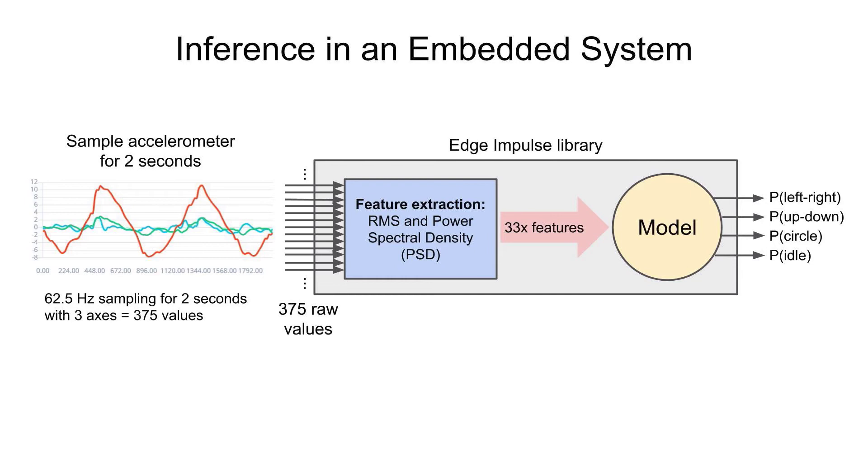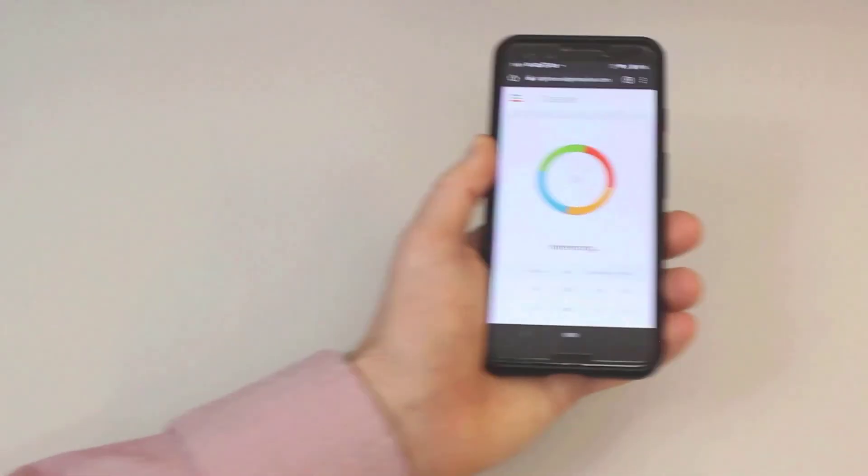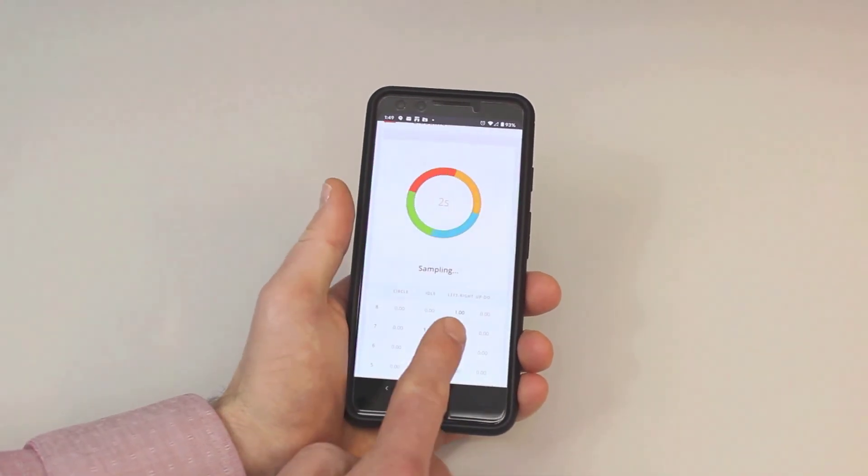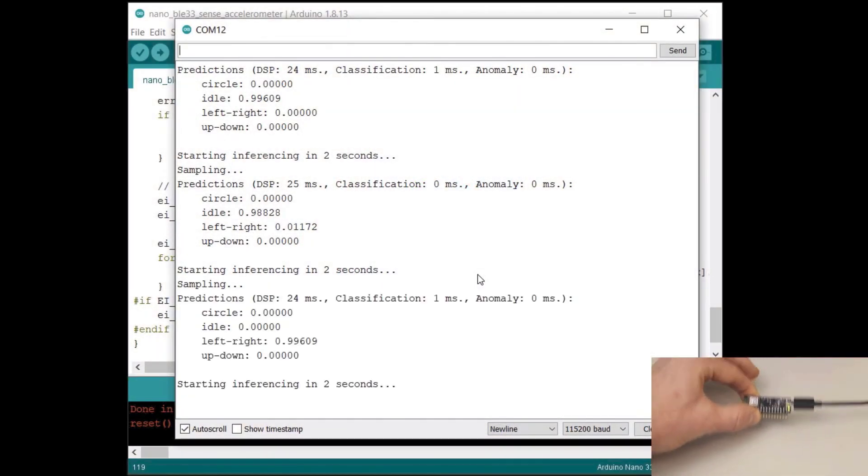We can use those probabilities to make decisions or execute other actions in our embedded system. I gave you a demonstration using a smartphone on how you can perform live inference in a browser. I then showed you how to deploy a model to an Arduino board and use it for live inference.